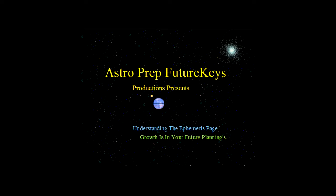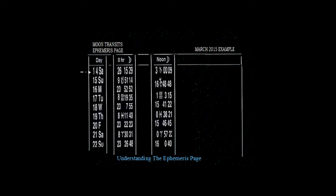Now we go on to March 14th 2015. We look at the noon moon — it's at 3 degrees Capricorn — and we compare that to the next day, the 15th, where the daily motion progressed to 16 degrees Capricorn. So we compare the difference: 3 degrees Capricorn minus 16 degrees Capricorn equals 13 degrees. Let's consider the earth element of Capricorn. Remember the trinity of earth is Taurus, Virgo, Capricorn.